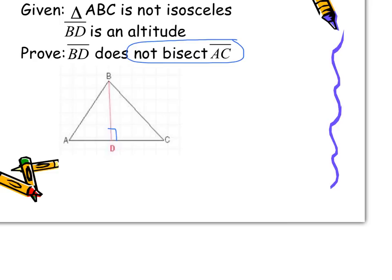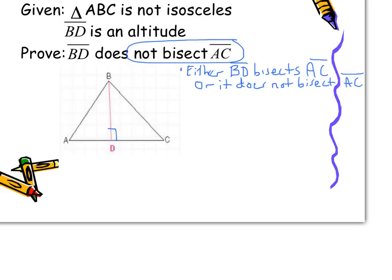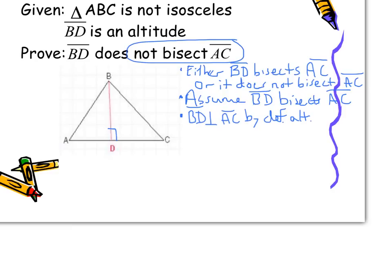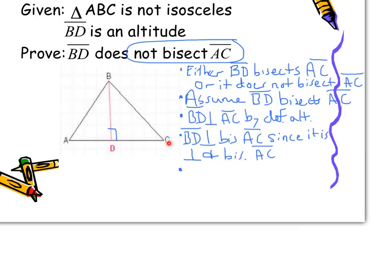So the first thing I'm going to do is give the two options: either BD bisects AC or does not bisect AC. Next, I want to assume that BD bisects AC — I'm going to assume the negation of that prove statement. From here I'm going to try and contradict something in the given. Now, since BD is an altitude, I know that BD is perpendicular to AC. And since BD is perpendicular to AC, and we assumed that BD bisects AC, doesn't that mean that we have a perpendicular bisector? We know that any point on the perpendicular bisector is equidistant to the endpoints.